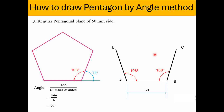The remaining two edges we have to represent with the help of a compass. Using the compass, we measure the length A to B, and consider points C and E as the starting points to draw arcs. Keeping one end of the compass on point C, we draw an arc. Then similarly from point E we draw a second arc. These two arcs should intersect, and that intersection point will be D — the remaining point of the pentagonal plane.